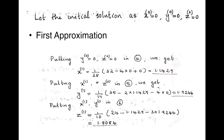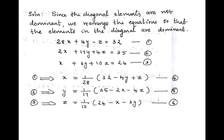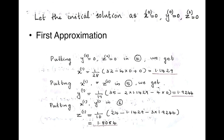Now compute z¹ using the formula in equation 6, which involves x and y. At this stage, x¹ and y¹ are both available, so substitute x¹ and y¹ into equation 6 to find z¹. With this, the first iteration is complete and we have improved the solution from the initial 0, 0, 0 to a new set of values.